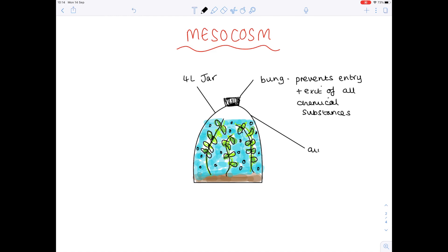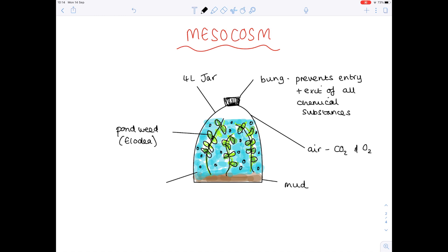At the top we have air which obviously contains carbon dioxide and oxygen. Because we've got an aquatic environment with water plants, we have some mud at the bottom for them to anchor into. Here's our pondweed which tends to be elodea, which is a species of pondweed. And then although it looks like it's just water, that water will be full of many different things and many organisms. It contains that pondweed which is an autotroph.